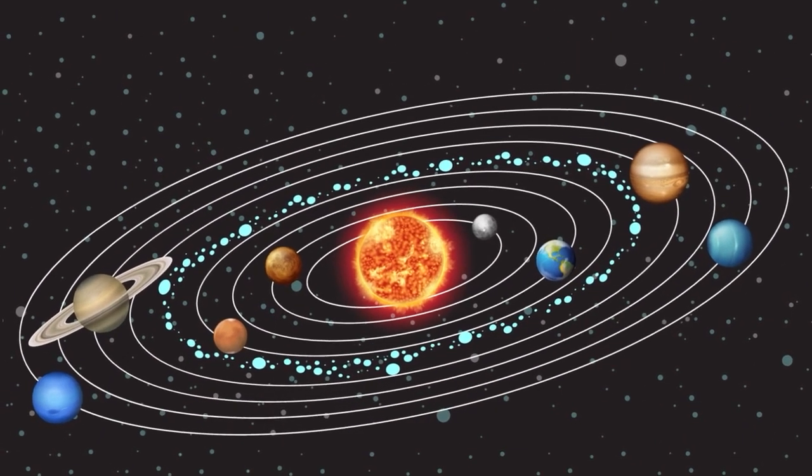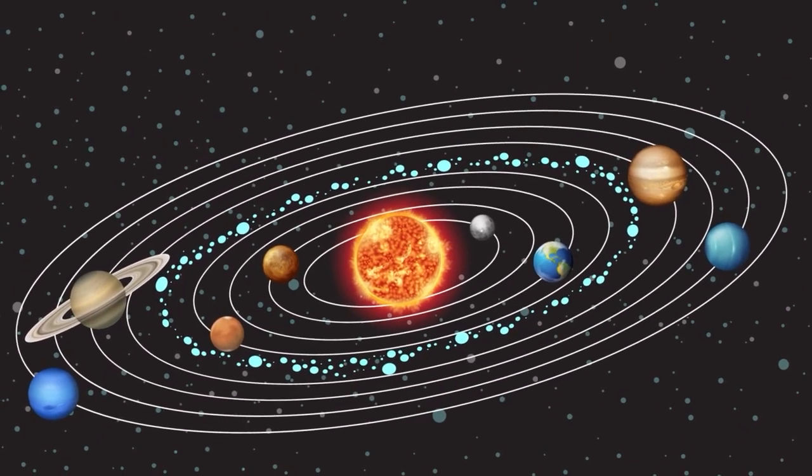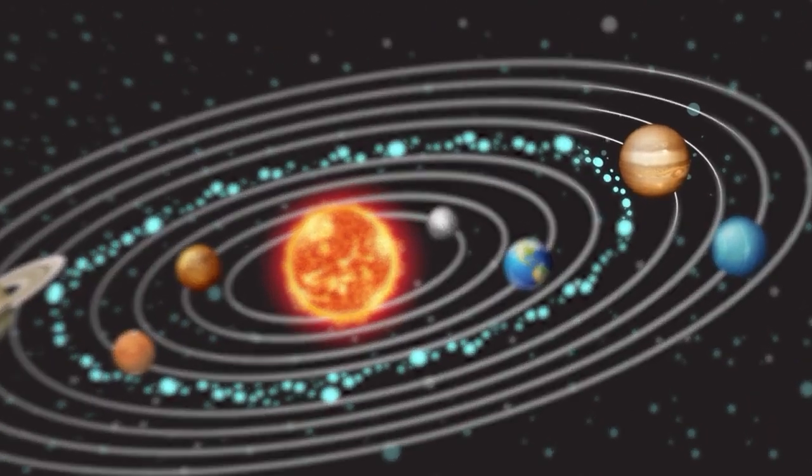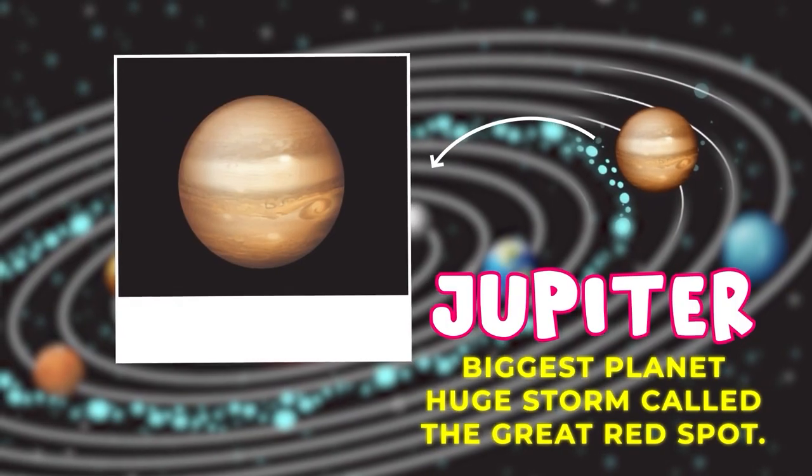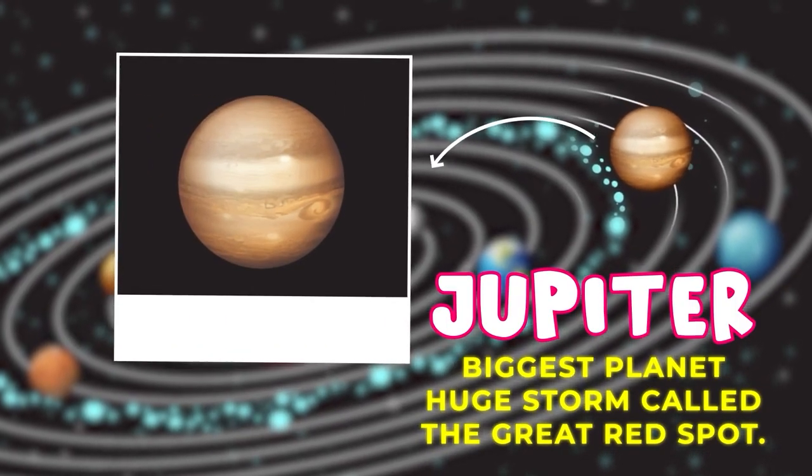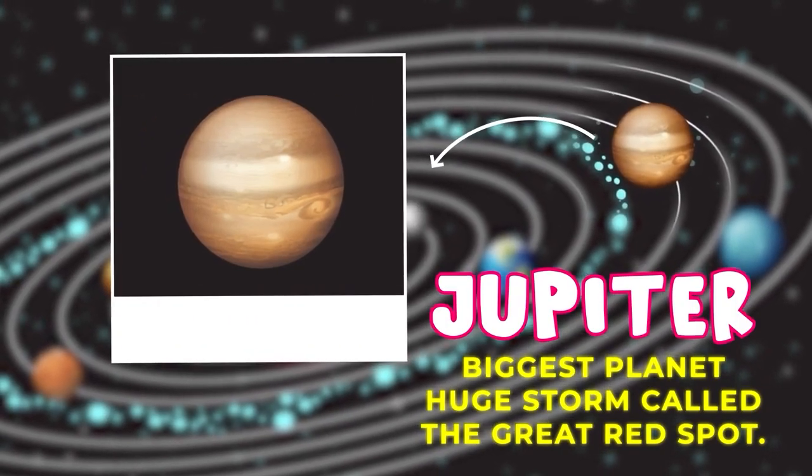Now, let's visit the outer planets, which are farther from the sun and much bigger. Jupiter is the biggest planet in our solar system. It has a huge storm called the Great Red Spot that's bigger than Earth.